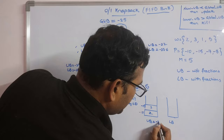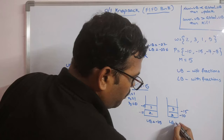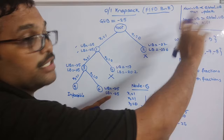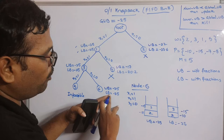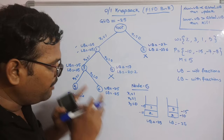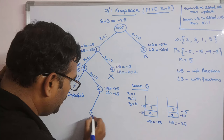For Node 6 (x3=0), we avoid the third element. Consider weights 2 and 3 (profits -10 and -15), knapsack becomes 5. Upper bound = -25 and lower bound = -25. Check conditions: new UB (-25) < global UB (-25) → false. LB (-25) > global UB (-25) → false. Node 6 can be expanded.